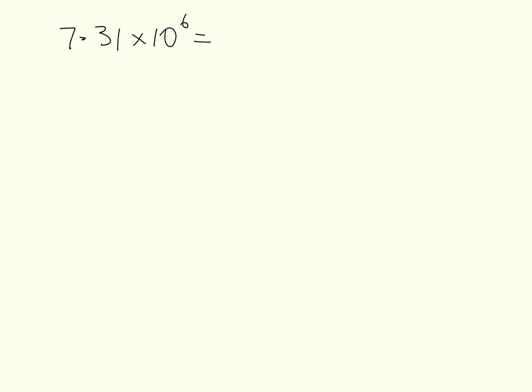I'm going to start by writing it as 7.31, and I'm going to put some zeros here. Now the reason I put those zeros to the right is because I have a positive power. It means that this is a very large number. Now 10 to the power of 6 means 1 million. So this is really 7.31 million.